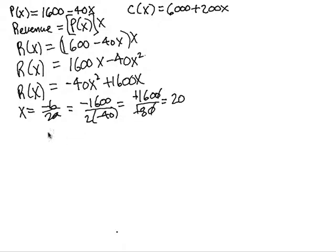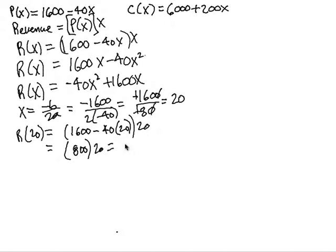So the x coordinate of the vertex is 20. Now all we need to do is plug 20 into the function and we're going to have 1600 minus 40 times 20 times 20. And this will give us, on the inside we have 1600 minus 800, so 800 times 20 is going to give us 16 and 3 zeros.